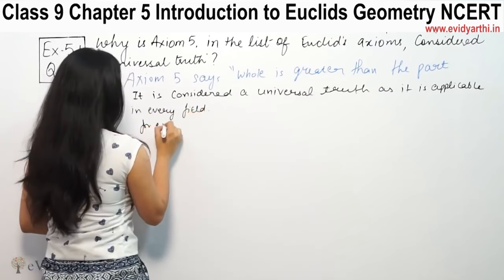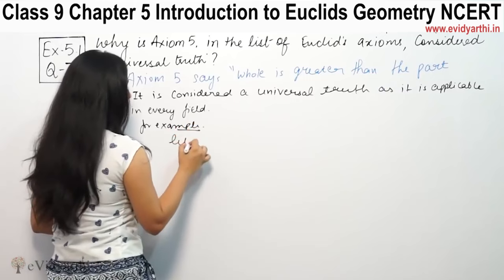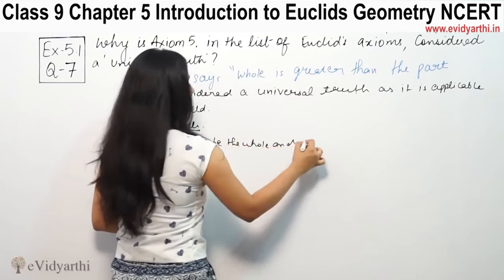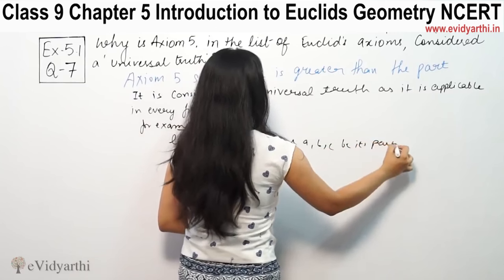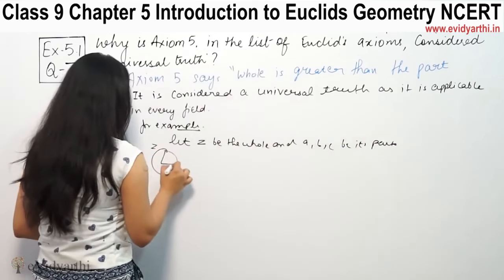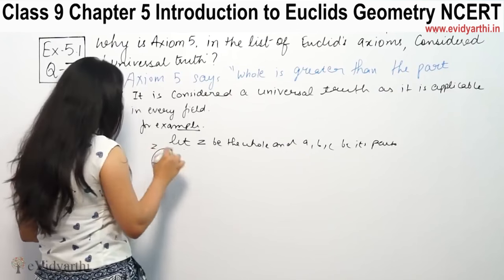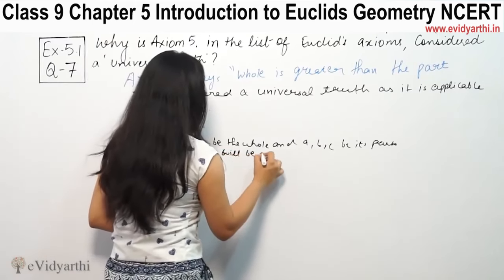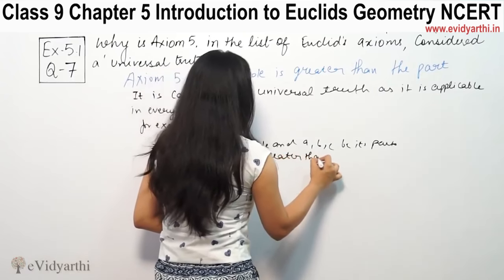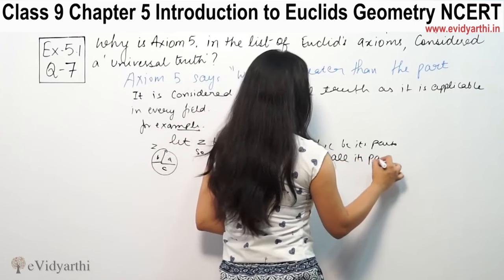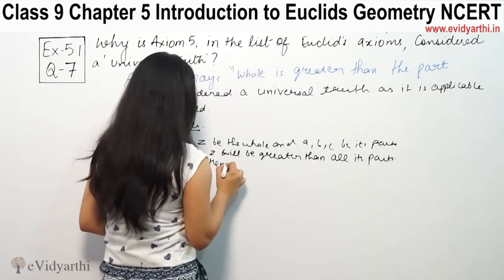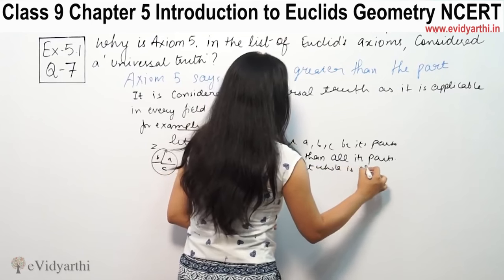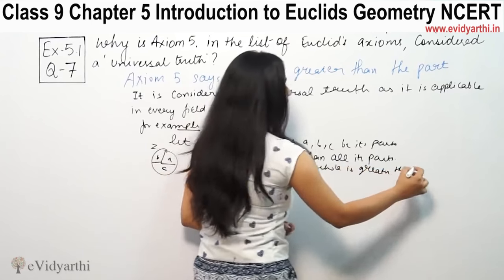For example, let us take Z as the whole and A, B, C as its parts. So Z is the whole thing, A is a part, B is a part, and C is a part. Basically, Z will be greater than all its parts. Hence, we can say that whole is greater than the part.